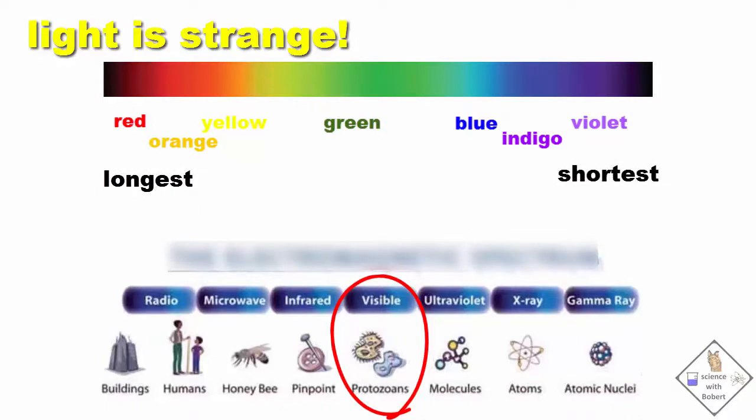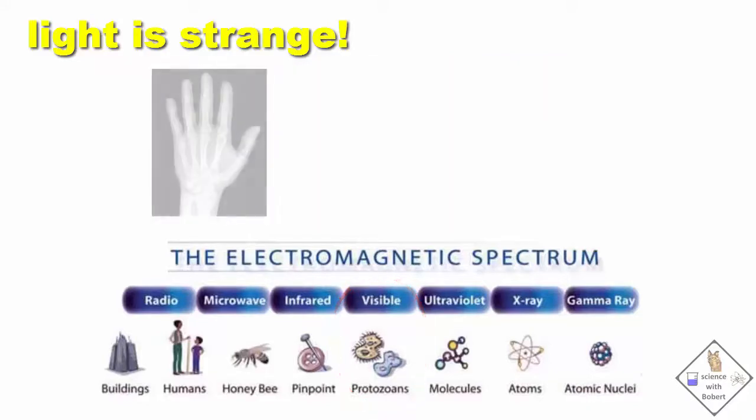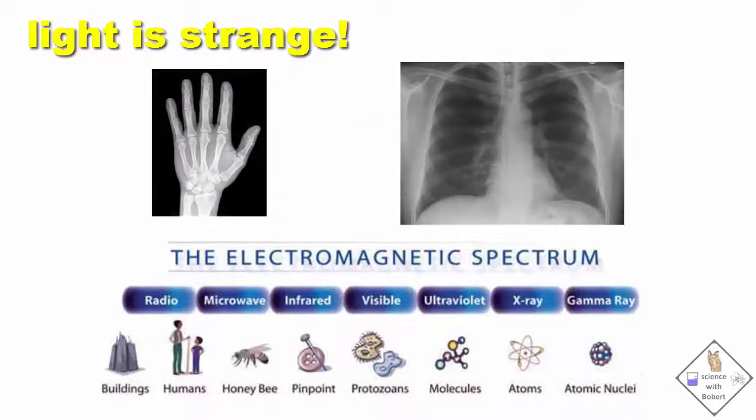All these different ranges of light are referred to as the electromagnetic spectrum. Notice the shorter the wavelength of the light, the more energetic the light is. For example, light that is the size of atoms, called X-rays, are so powerful they can pass through skin and muscle, but not bone, allowing doctors and dentists to use X-rays to take pictures of our bones and teeth to help them make diagnoses.